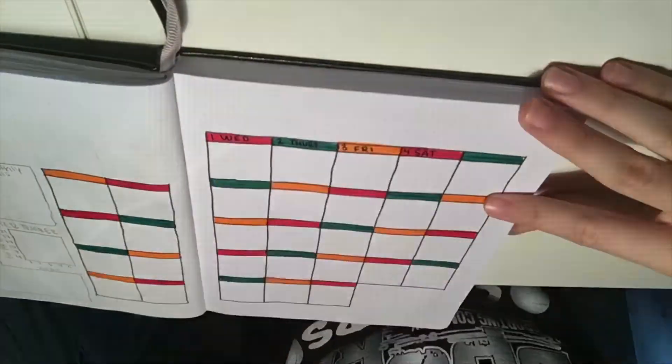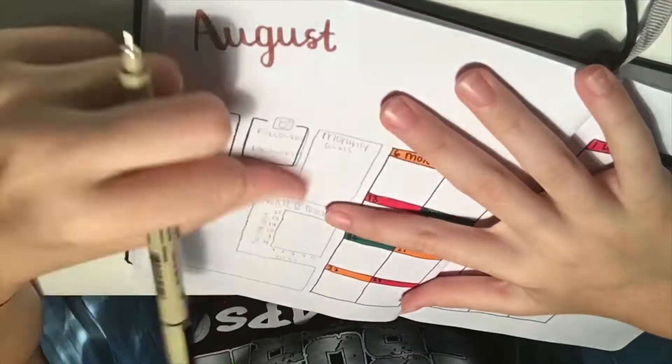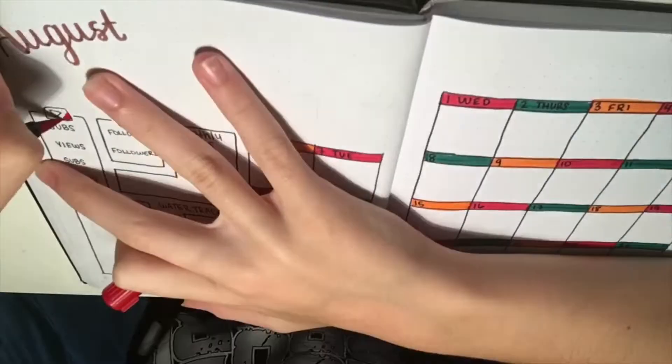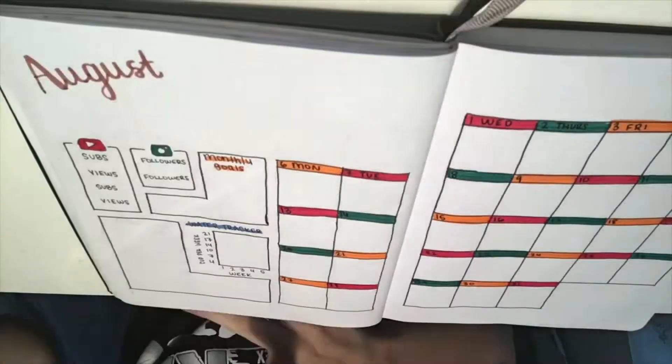I wrote the days of the week at the tops of each box, as well as the date. On the left hand side, we have my YouTube and Instagram trackers, as well as some monthly goals. Below that is my weekly water tracker, and I had some extra space, so I made a notes box.